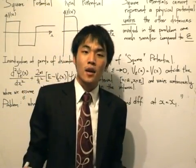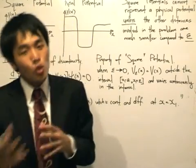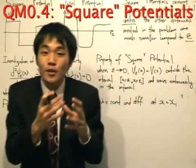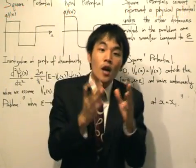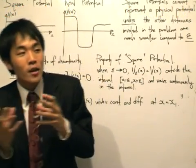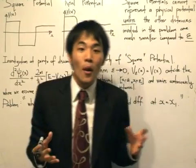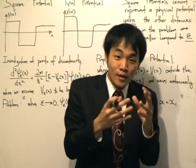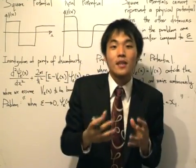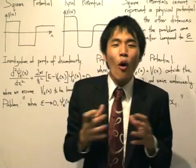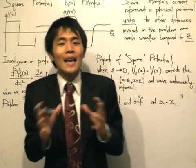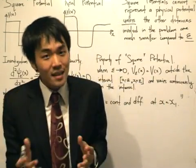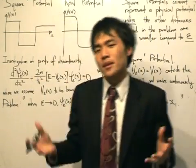Good evening, guys. In quantum mechanics, we will always explore the situation where a particle moves through a potential, and this potential varies dramatically at a short interval. For example, a particle could be moving where the potential is equal to zero, and then as it passes a certain point, the potential will jump to a certain value, say V0. From these cases, we can draw all these real quantum mechanics phenomena. Today's lesson, we're going to talk about potentials.